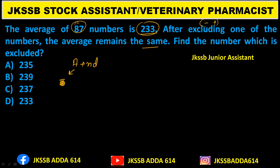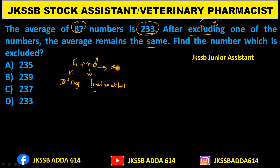In this formula, 'a' is your first average — it will be included or excluded. 'n' is the final number, that is, the total count after include or exclude. 'd' is the difference in average between the first and final state.